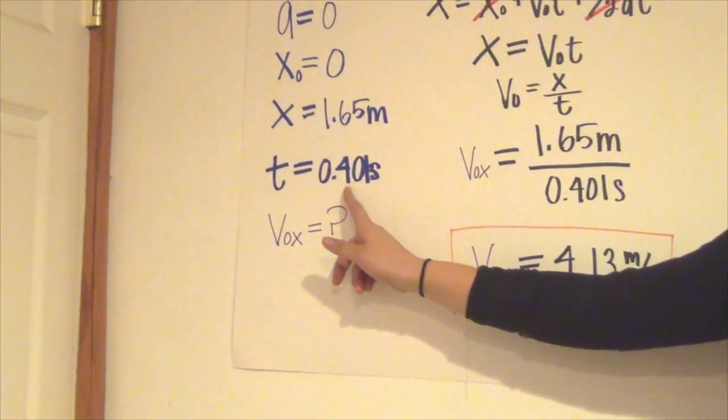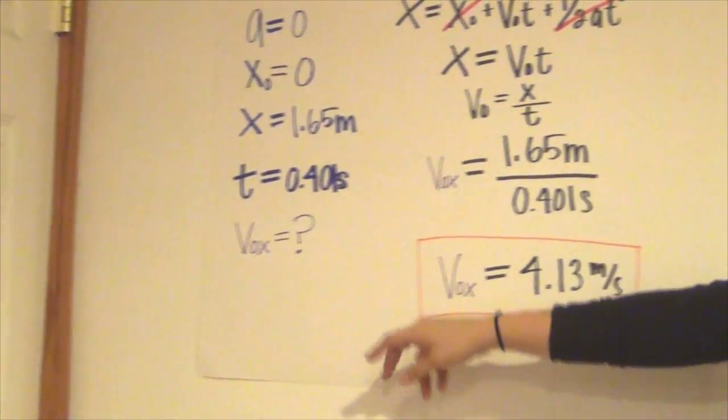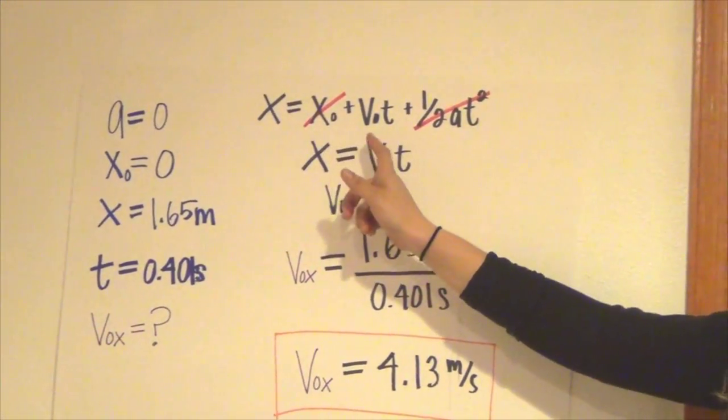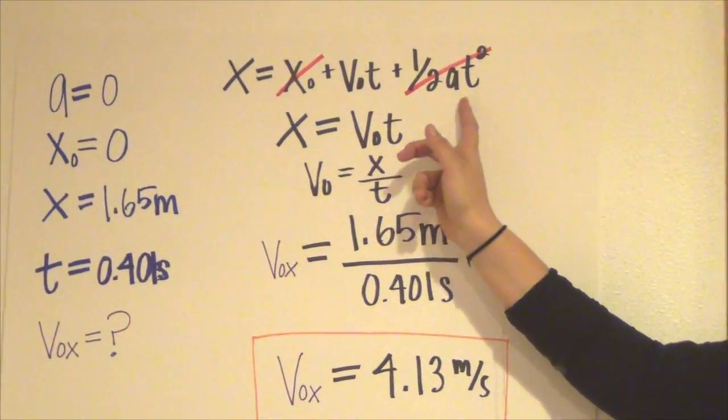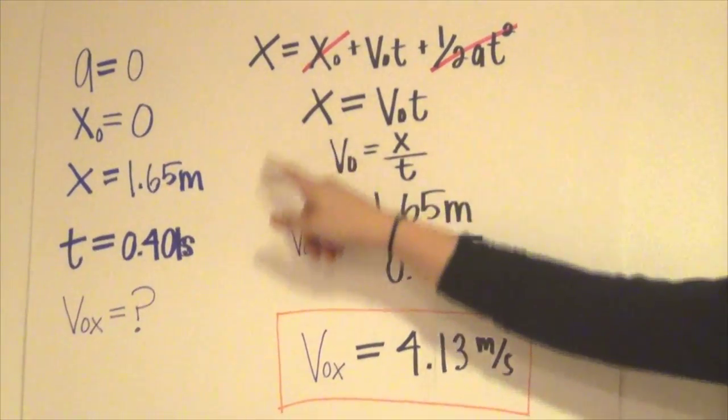We use the equation x equals x naught plus v naught t plus one half a t squared. We cancel out these and these to equal 0.